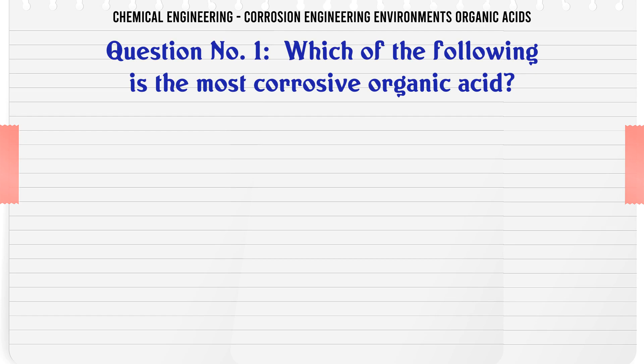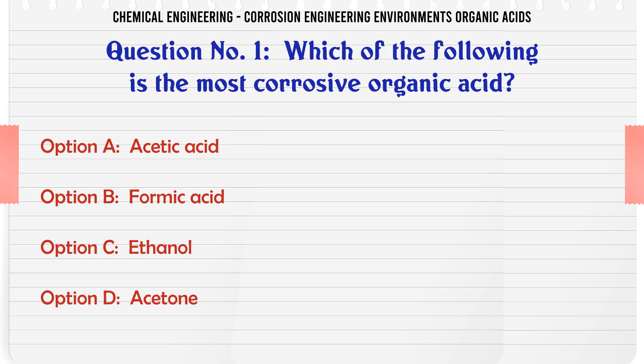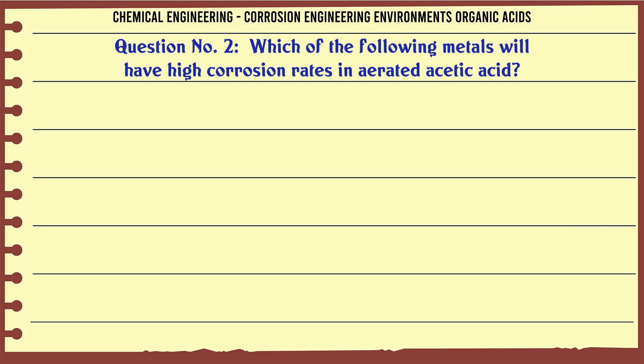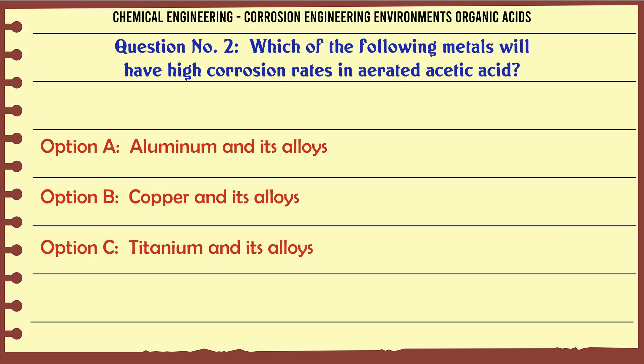Which of the following is the most corrosive organic acid? A. Acetic acid, B. Formic acid, C. Ethanol, D. Acetone. The correct answer is Formic acid.